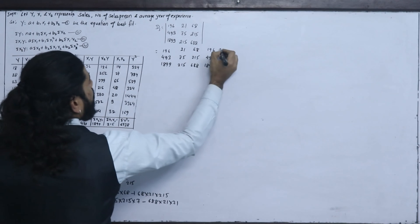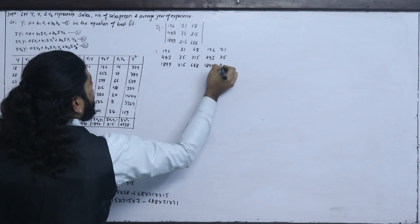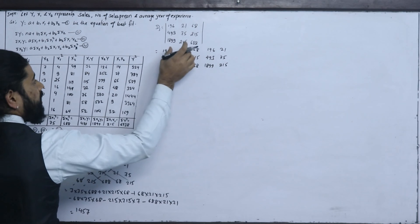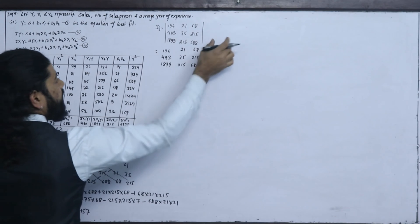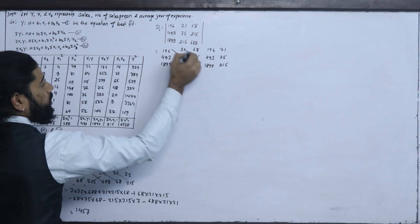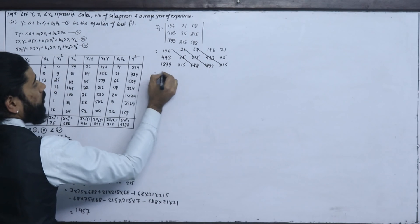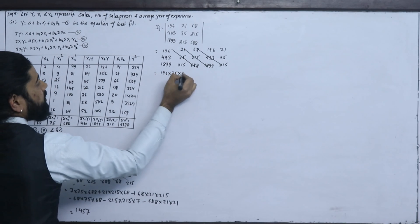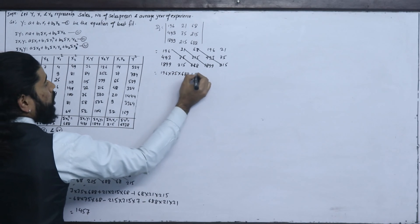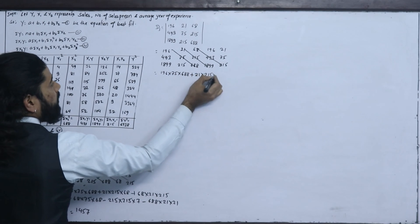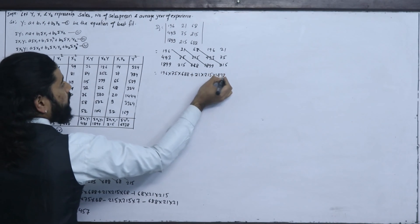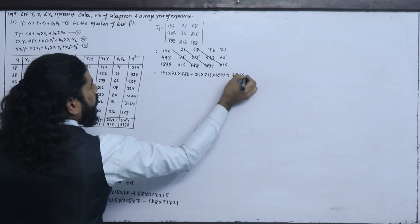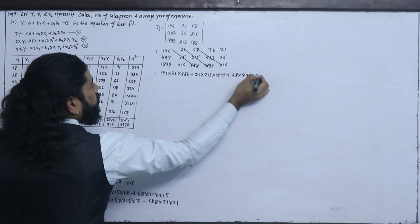Now expanding the determinant: 21, 75, 215. The expansion gives terms: 196 times 75 times 688, plus 21 times 215 times 1899, plus 68 times 493 times 215.